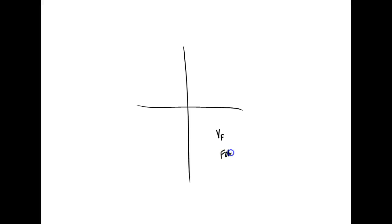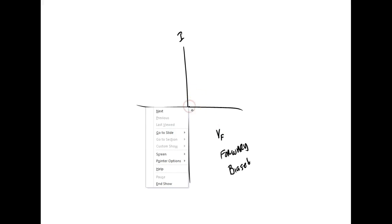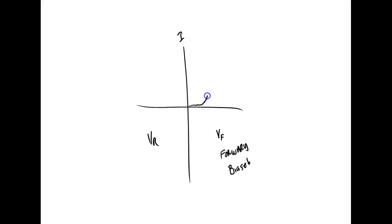The VI characteristic curve for a diode shows forward bias on the right side and reverse bias on the left side, with current on the vertical axis. In forward bias, as soon as we apply voltage there's a small current flow, and around 0.5 volts it starts rising at an angle — it's not a straight line. In reverse bias we have a small leakage current until around 100 volts.